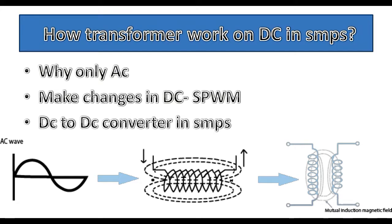How are changes made in DC? The DC is converted into SPWM — sinusoidal pulse width modulation. Hence the transformer works on AC and also on SPWM in DC. So how does the transformer work on DC? That is what I am going to explain here.